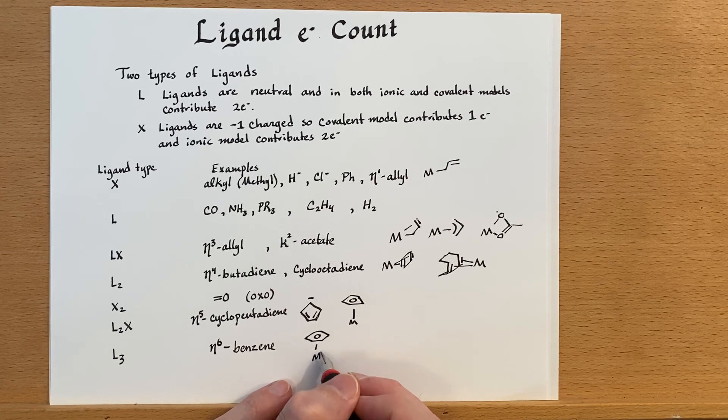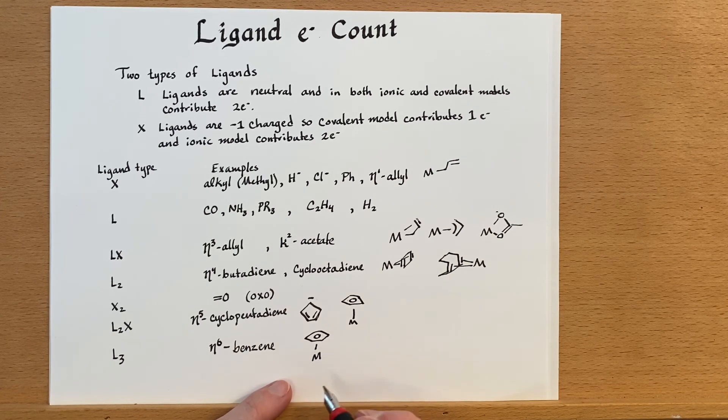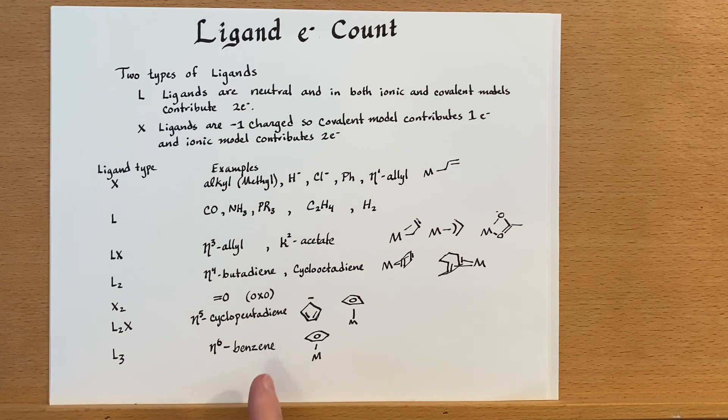And in this case, you have six carbons each bound to the metal. And so that would actually contribute six electrons because of the three double bonds producing three neutral ligands.